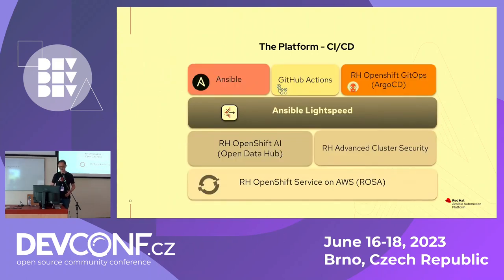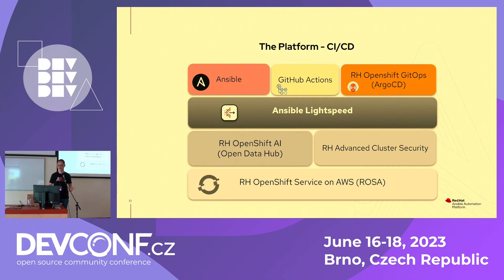I'd like to talk a bit about the CI/CD side of it. The three major components are: first, Ansible — we mainly use Ansible for infrastructure creation, such as creating the cluster, VPC, network, RDS, and Redis cache. The second is GitHub Actions, mainly for CI: PR checks, testing, unit tests, static analysis. The third and key component is Red Hat OpenShift GitOps, whose upstream is Argo CD. We love using Argo CD — it bridges everything from PR all the way to deployment into production.